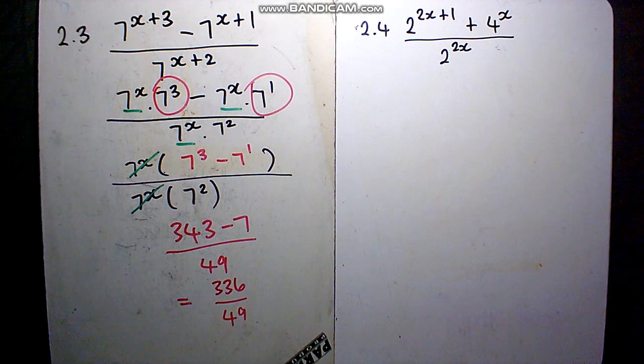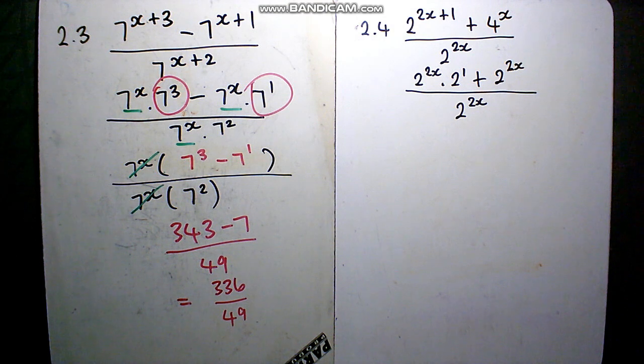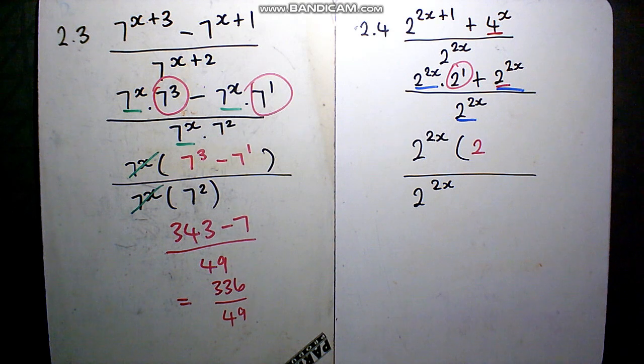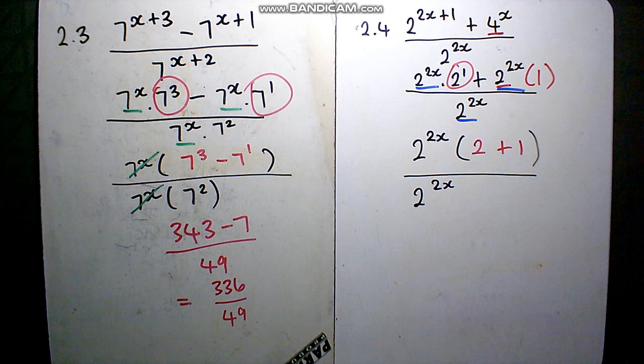Do try 2.4. Pause the video, try it out, and then see the solution. First step is to break it up. Please note that 4 is 2 to the power 2. Next we can see that there will be some common factors. Remove the common factor. What is left? Now looking at the end, if 2 to the 2x is removed, what remains behind? Notice that it leaves behind the hidden one. So can you see anything that will be cancelling since there will be only multiplication in this question? The final answer is 3.